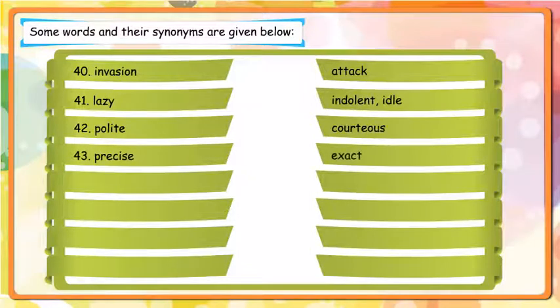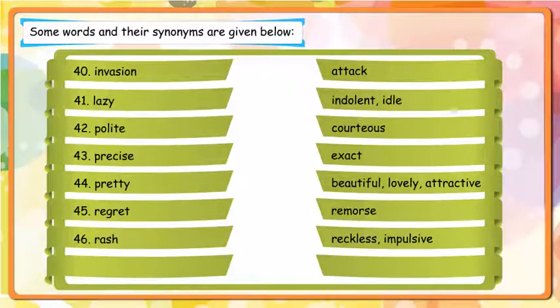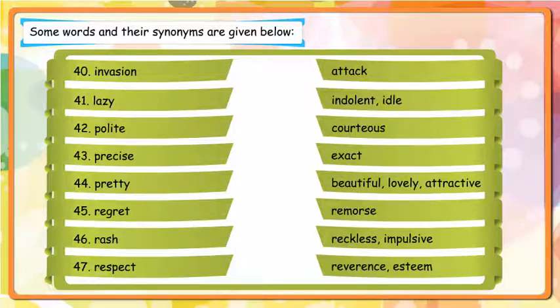Precise - Exact; Pretty - Beautiful, Lovely, Attractive; Regret - Remorse; Rash - Reckless, Impulsive; Respect - Reverence, Esteem; Rude - Insolent.